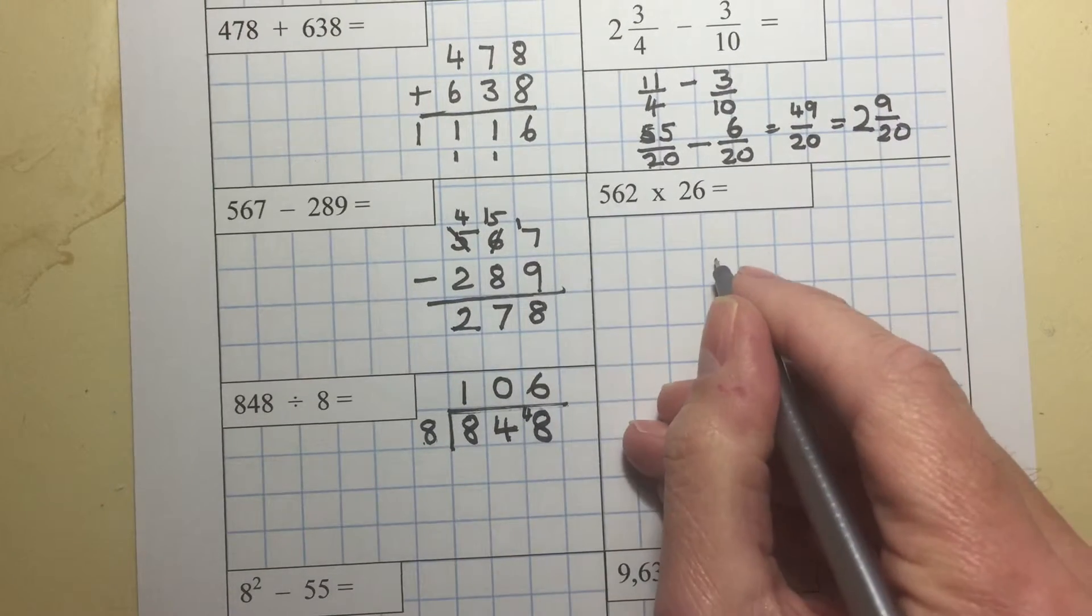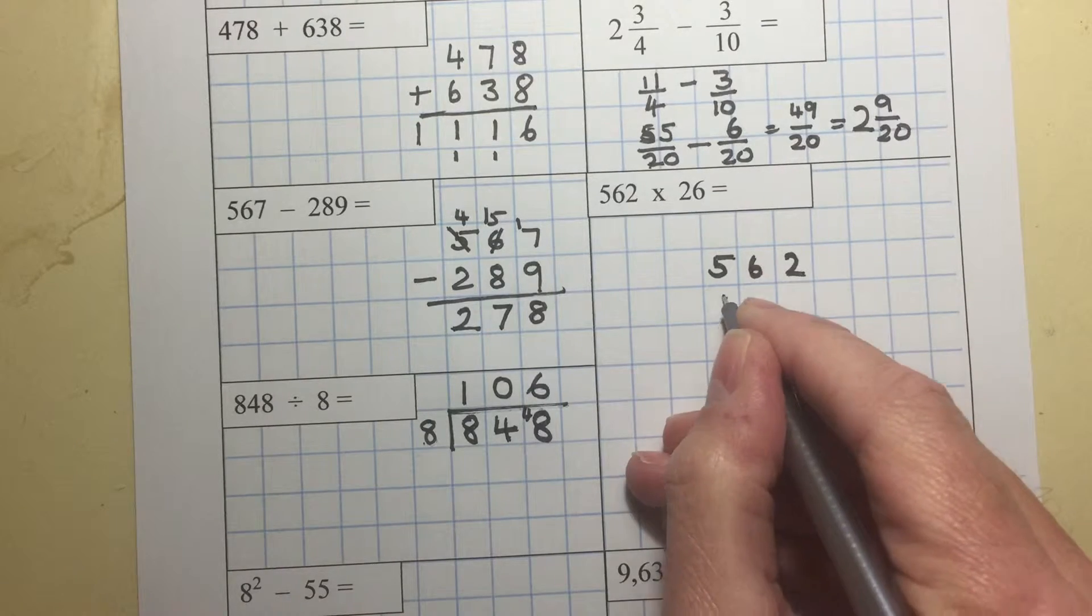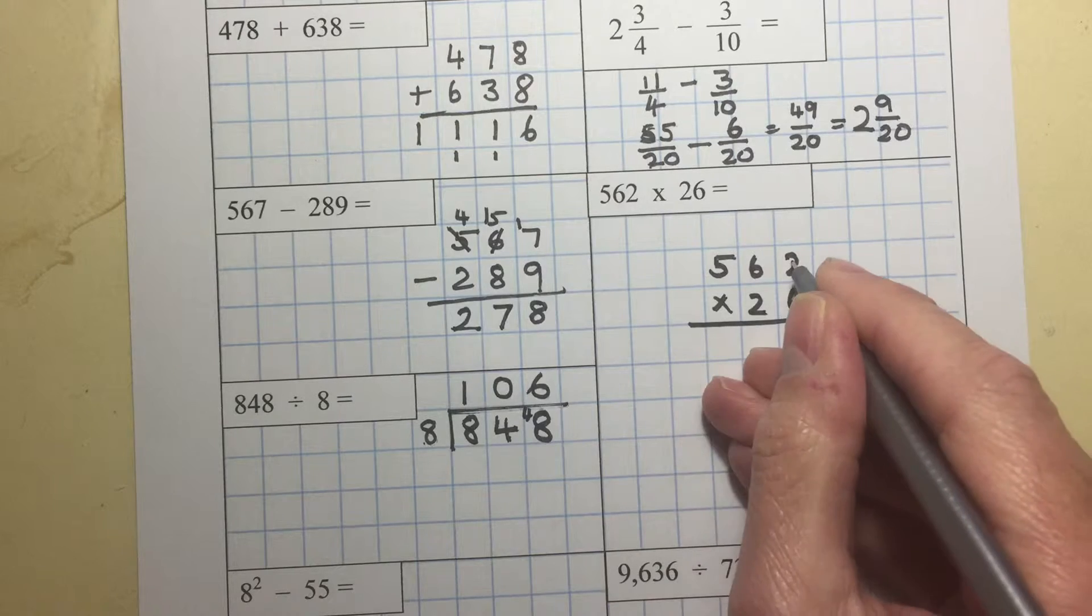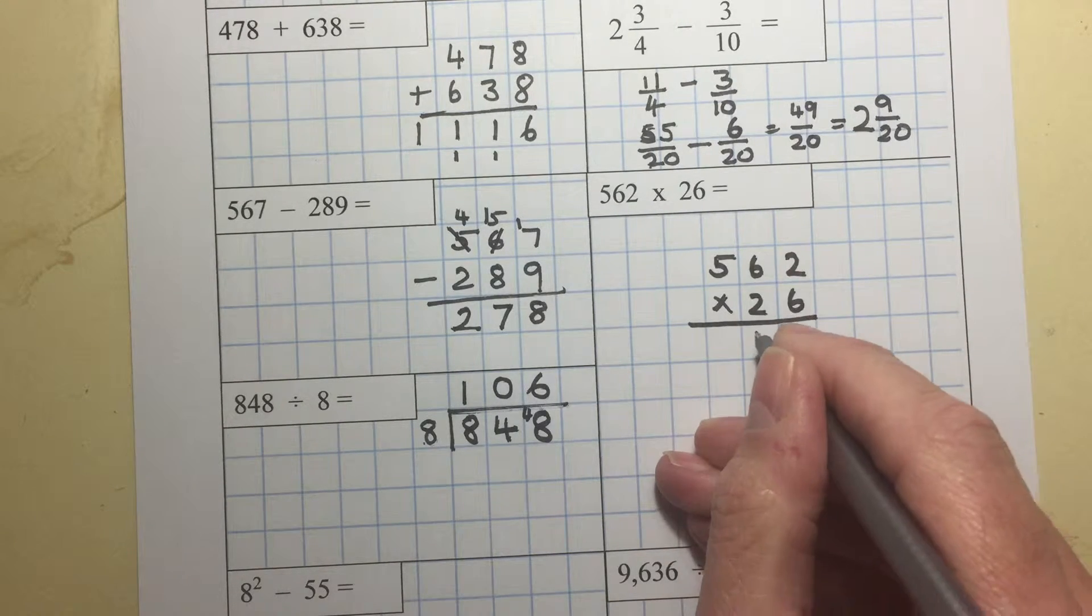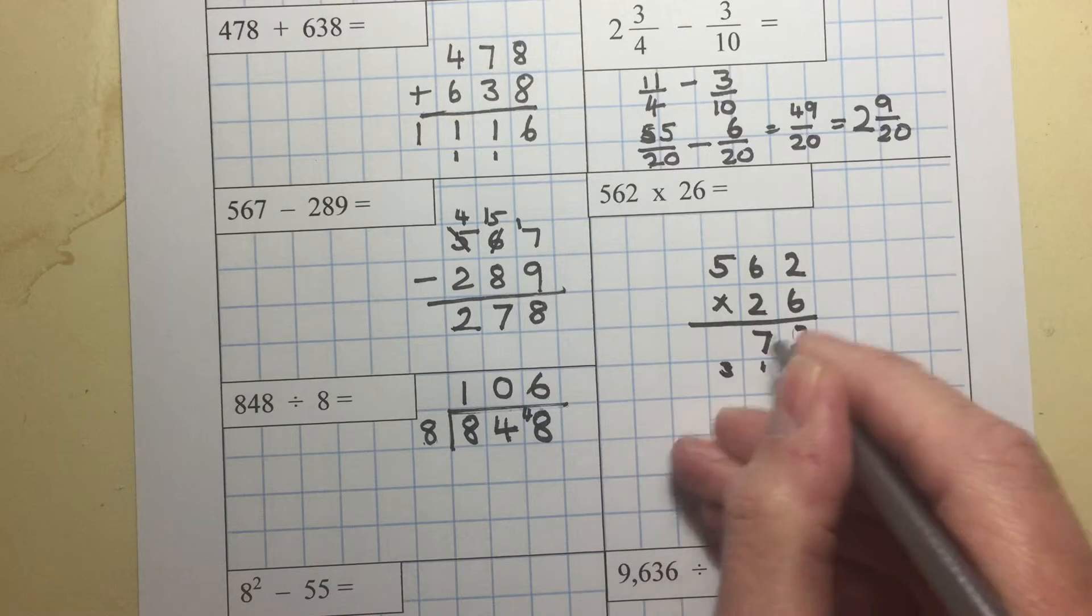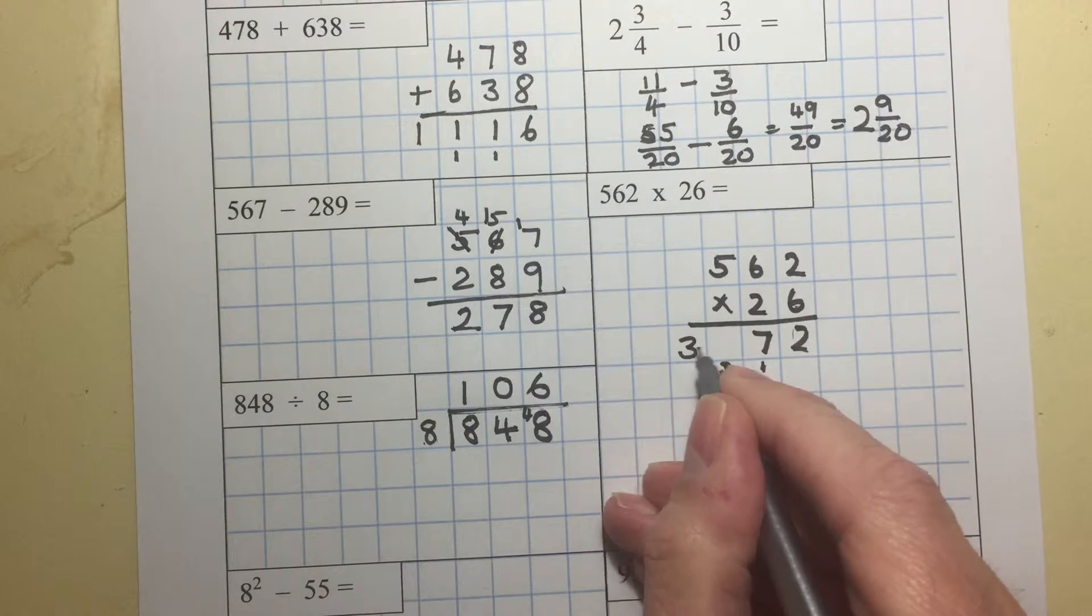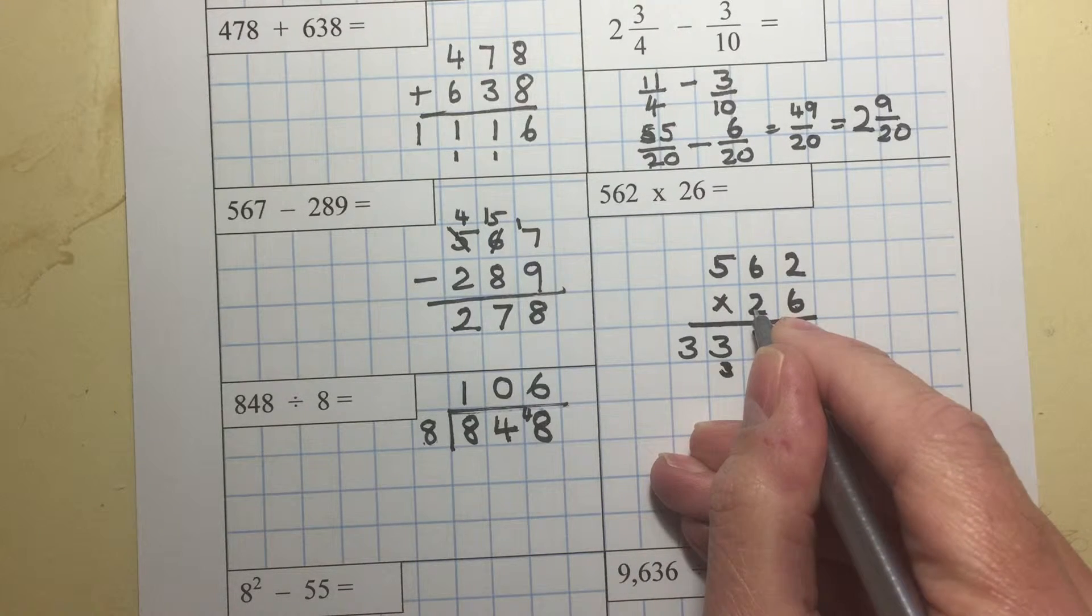Long multiplication. 562 times 26. 6 times 2 is 12. 6 times 6 is 36, plus 1 is 37. 6 times 5 is 30, plus 3 is 33. Put down the 0 because we're now multiplying by the 20.